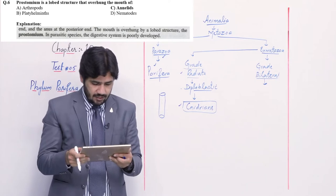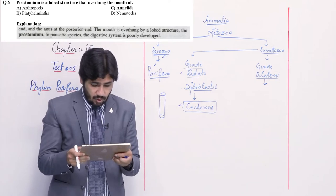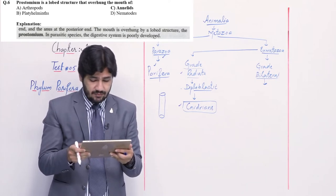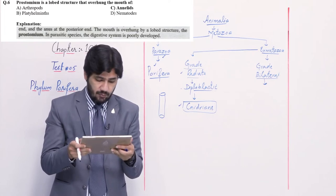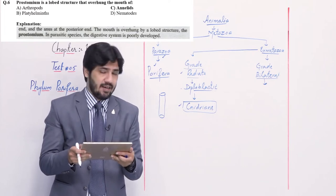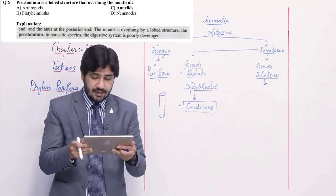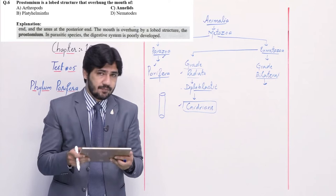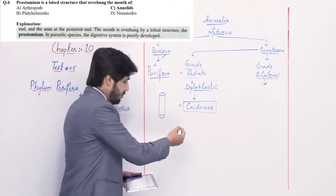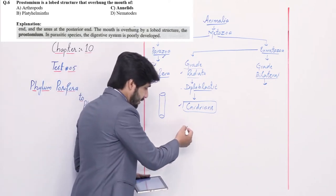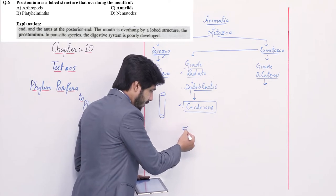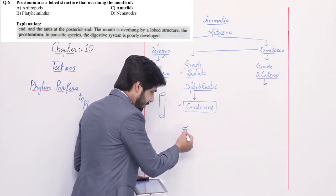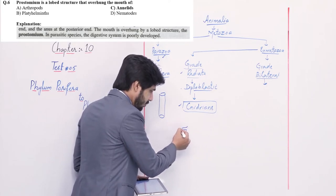Question number 6: prostomium is a lobed structure that overhangs the mouth of — alpha arthropods, beta Platyhelminthes, charlie annelids, and delta nematodes. Prostomium is a mouth-overhanging structure existing in annelids. Right option is charlie.